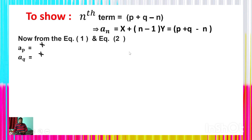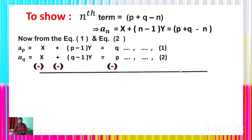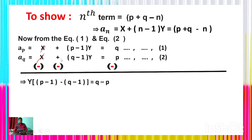From equations 1 and 2, subtracting: the x terms cancel. Taking y as a common factor: y × (p−1−(q−1)) = q − p. After removing brackets: y × (p − 1 − q + 1) = q − p, so y × (p − q) = q − p.